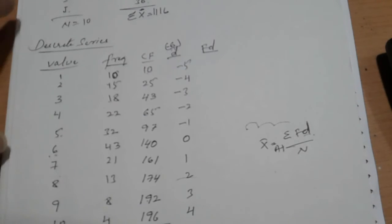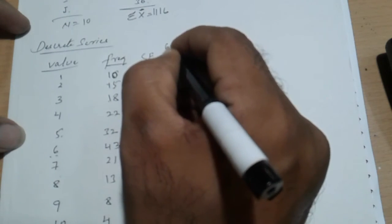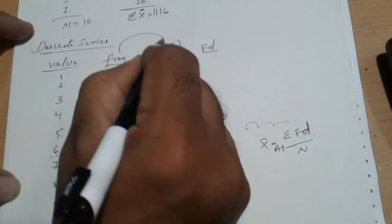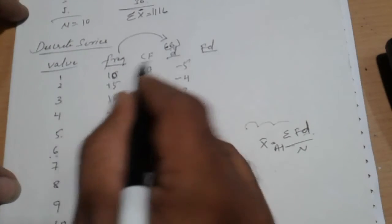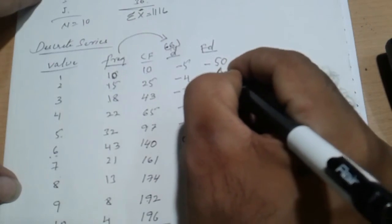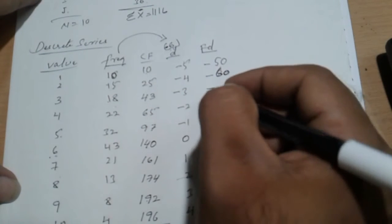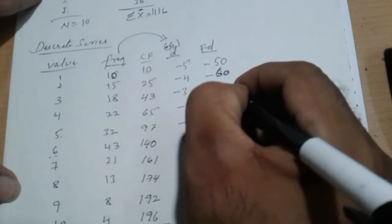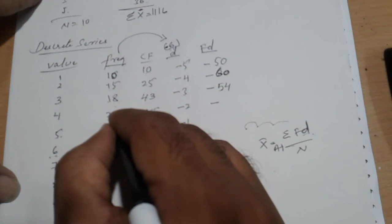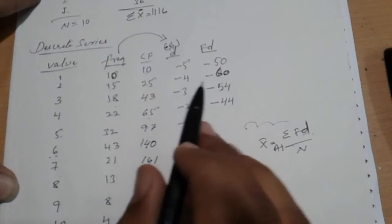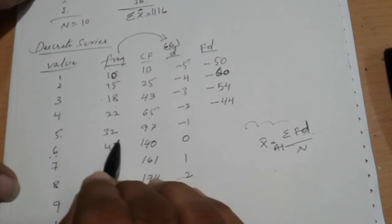Now f into d. We have to do f into d. This is plus 1 - I'm just showing 6 for the purpose of calculation. Now f into d means which one is f? This one is the frequency. And d we have to calculate. 10 into minus 5: minus 50. 15 into minus 4: minus 60. 18 into minus 3: 54. 22 into minus 2: minus 44. This should not be. Sometime we will calculate with this one. So, frequency into d - fd. D means deviation.